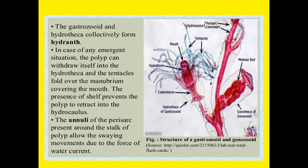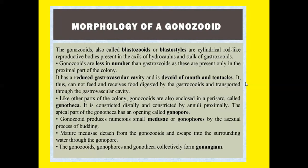Morphology of a gonozooid: gonozooids, also called blastozooids or blastostyles, are cylindrical reproductive bodies present in the axils of hydrocaulus and stock of gastrozooids. They are fewer in number and present only in the proximal part of the colony. A gonozooid has a reduced gastrovascular cavity and is devoid of mouth and tentacles; it cannot feed and receives food digested by the gastrozooids transported through the gastrovascular system. Gonozooids are enclosed in a perisarc called gonotheca, which is constricted distally, and the apical part has an opening called the gonopore. The gonozooids produce numerous small medusa buds by the asexual process of budding. Mature medusae detach from the gonozooid and escape into the surrounding water through the gonopore. The gonozooid, gonopore, and gonotheca collectively form a gonangium.